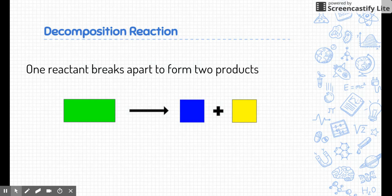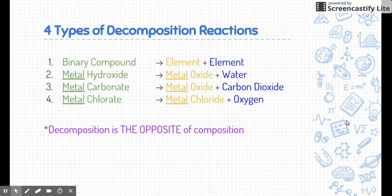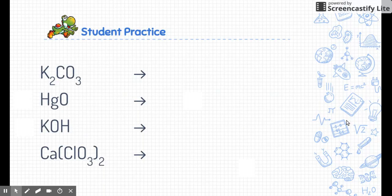Let's switch gears to the second type of reaction — the decomposition reaction. Here we have one reactant and it breaks apart to form two products. The great thing about this is all the decomposition reactions are exactly like the composition reactions — they're literally just flipped. If you flip that arrow, they're the opposite of each other. So let's see if you can use that to figure these four out. You may use your notes, but try to determine the products given only the reactants. These are all decomposition reactions — try to balance them when you finish. Pause the video and see if you can do all of these by yourself.